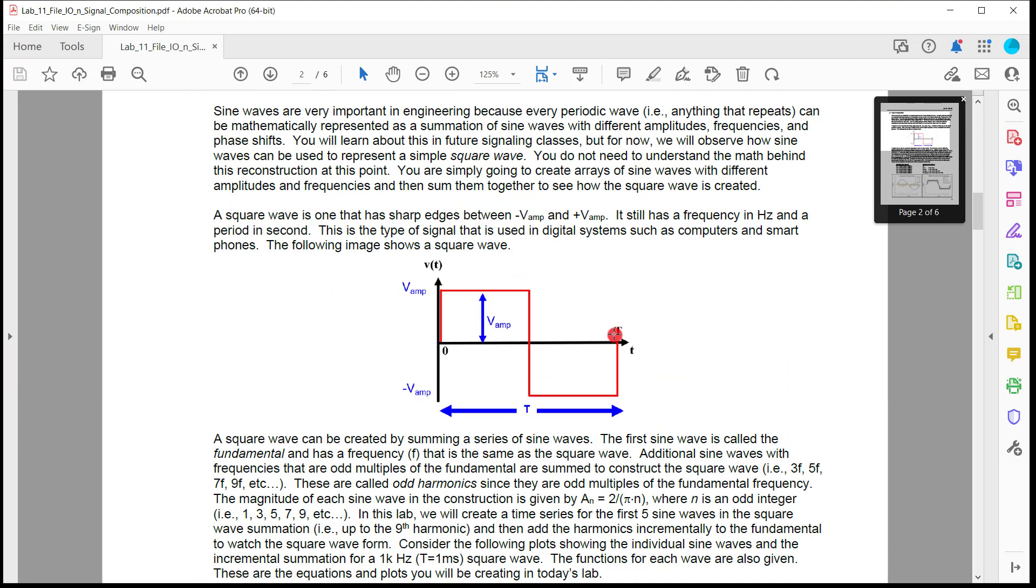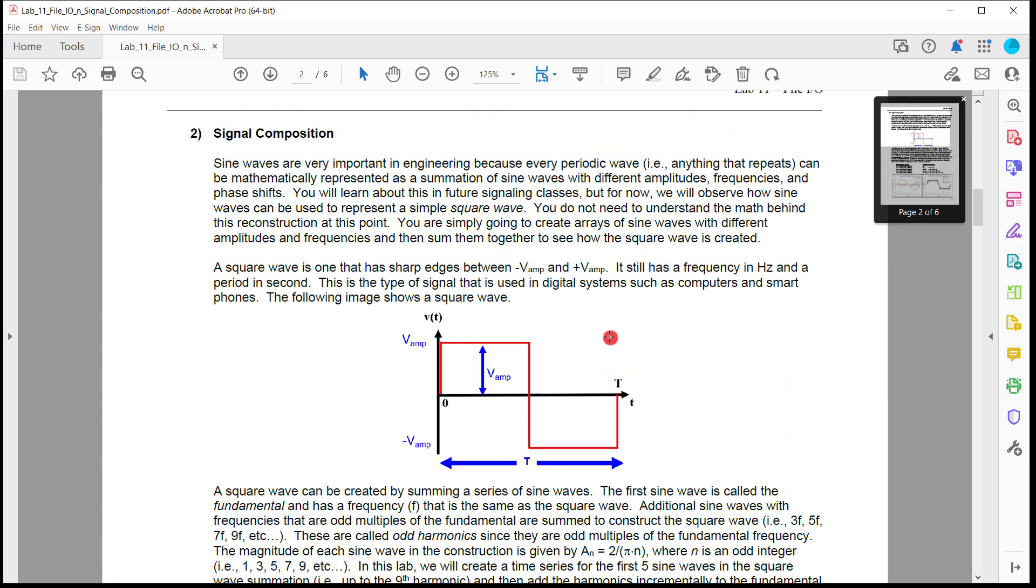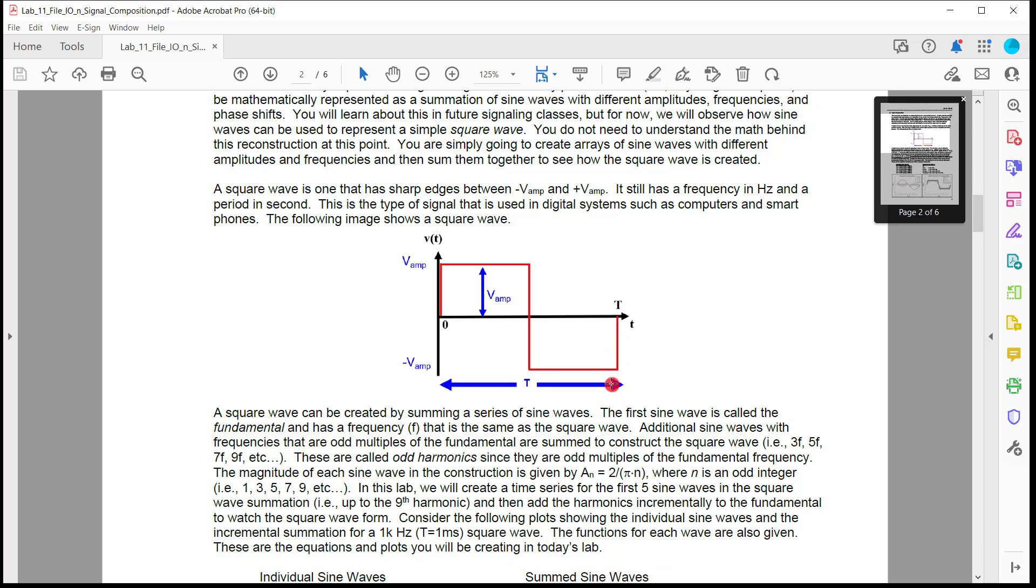Now let's take that and think about signal composition. It turns out that every periodic signal that we know of can be created using summations of sine waves. That includes everything, even a square wave. A square wave is something that looks like this. So it goes up to a value, stays flat, comes down to a value, stays flat. This is actually what a digital signal looks like. So these are the ones and zeros that make up the computer. If you put an oscilloscope on a signal, you'd see a square wave in a computer.